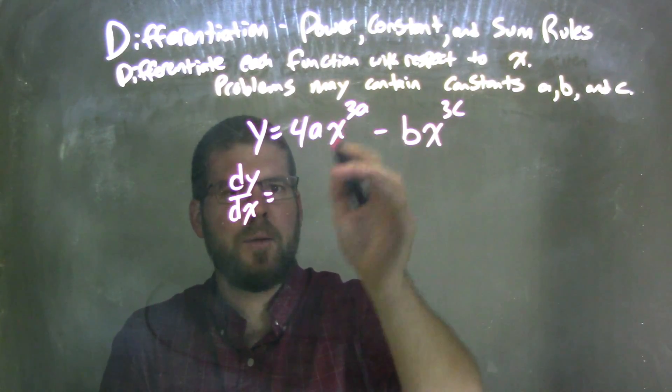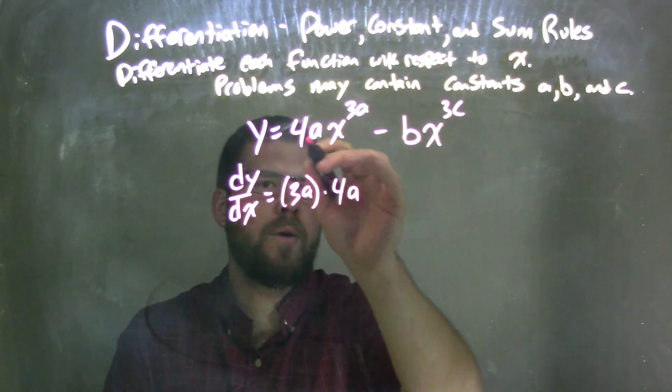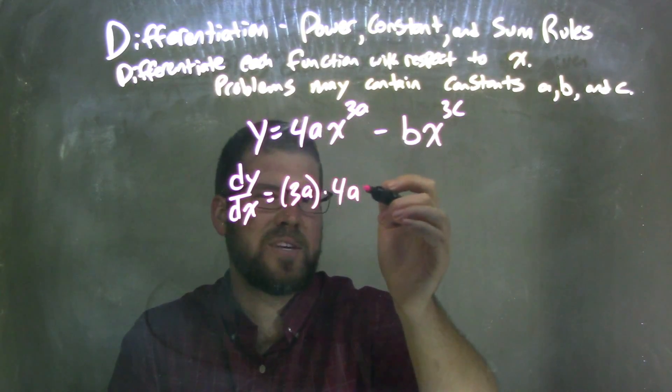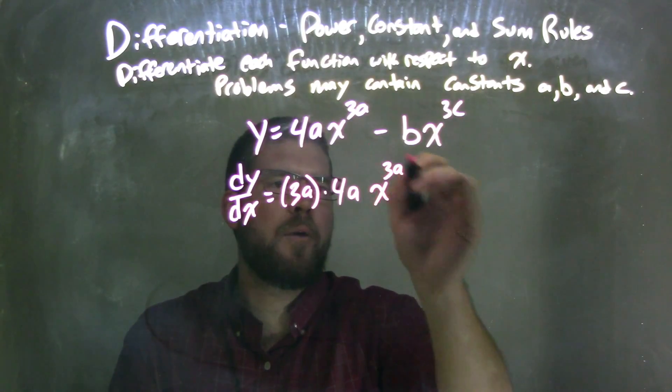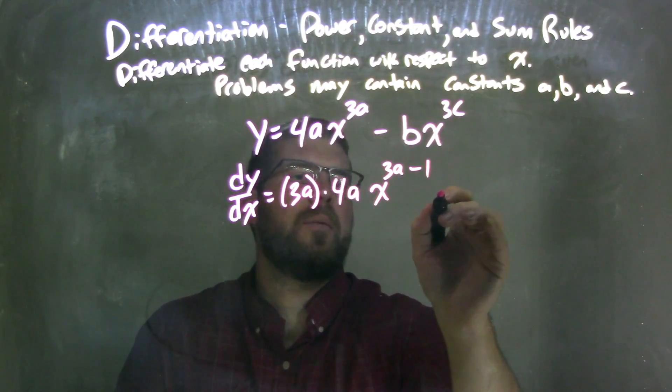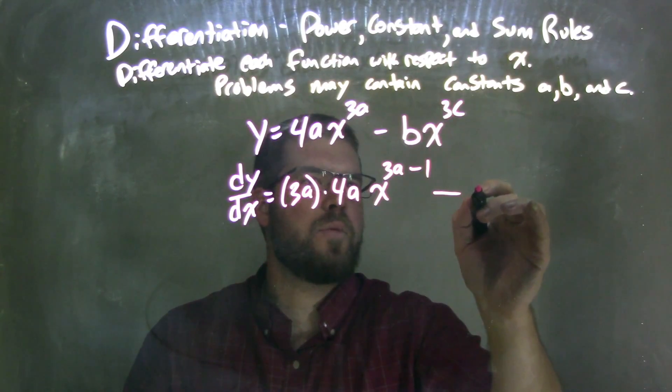Power rule still states the power comes down, so 3 times a times what's left, 4a, whatever those numbers are, these are some constant, 4 times a. x to the 3a, wherever the power is, we subtract 1 from it. Then we subtract here, the other side, well, the power comes down. Whatever 3c is,